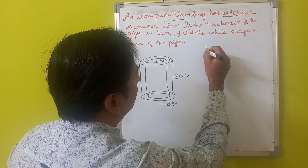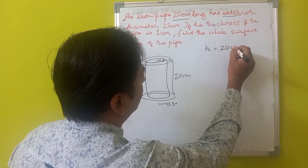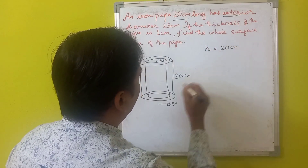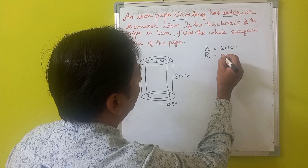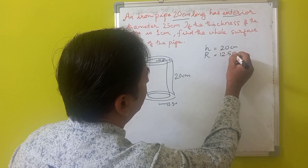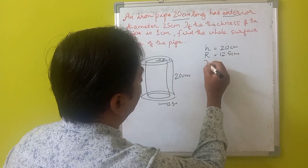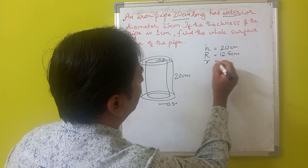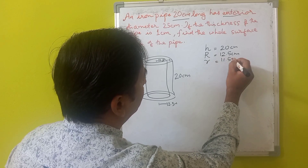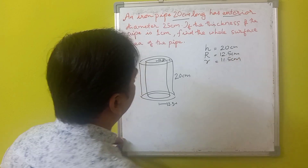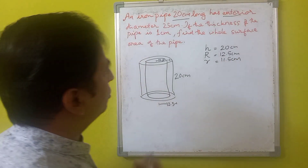So the height h = 20 centimeters, the external radius capital R = 12.5 centimeters, and the internal radius small r = 11.5 centimeters. These are all the dimensions we need to solve this problem.